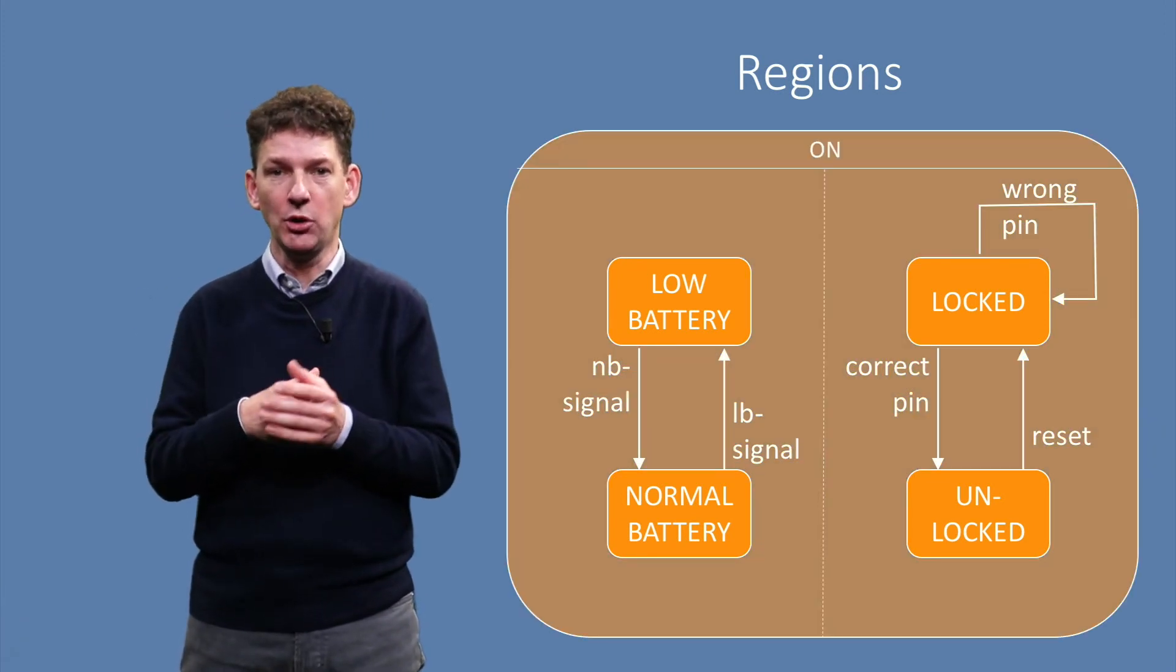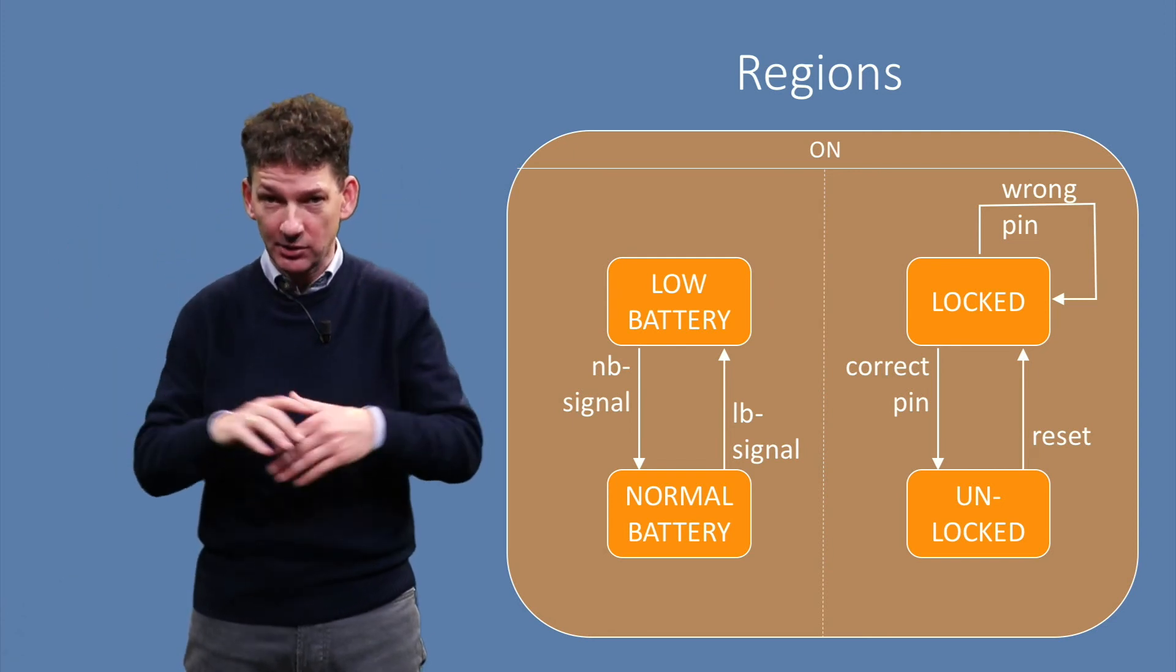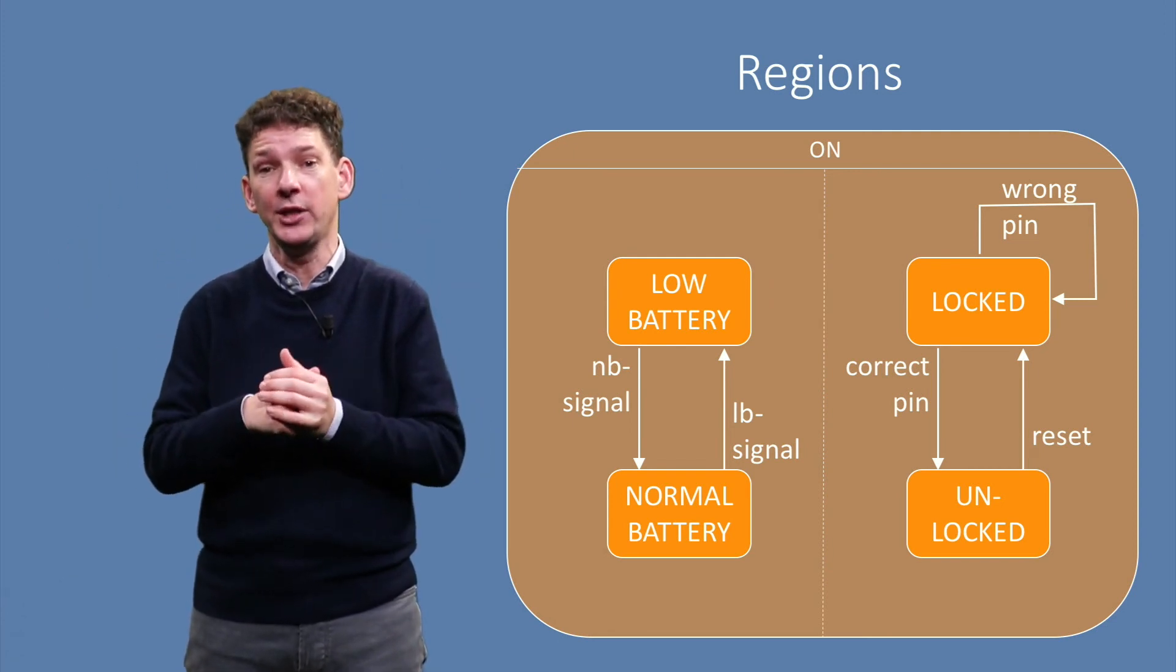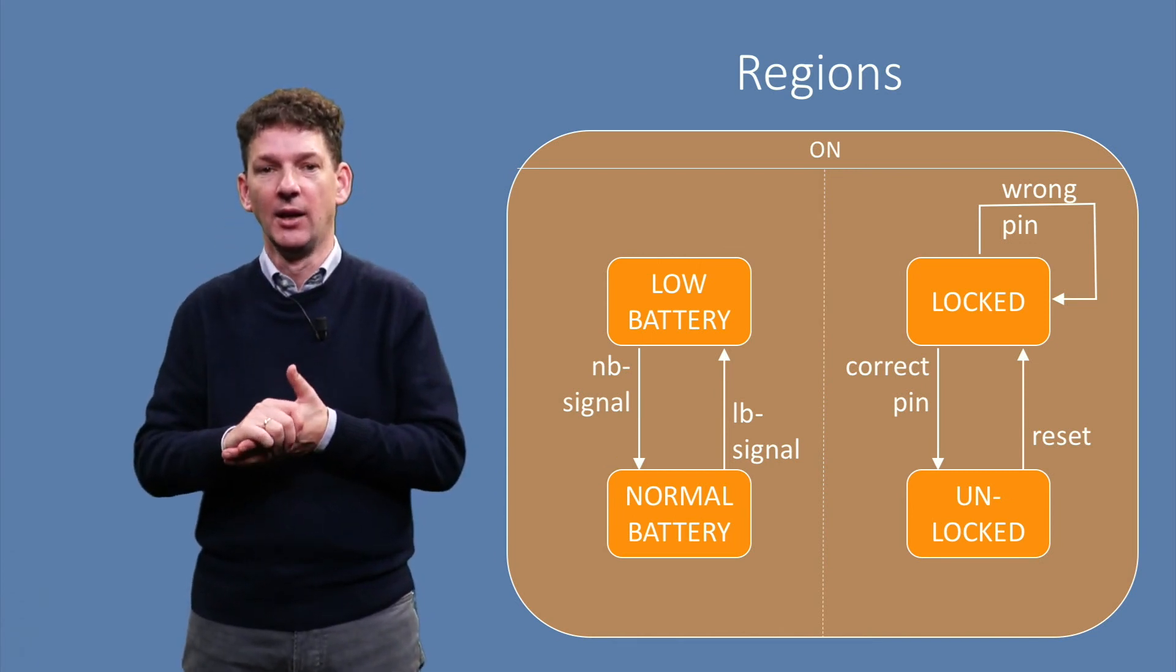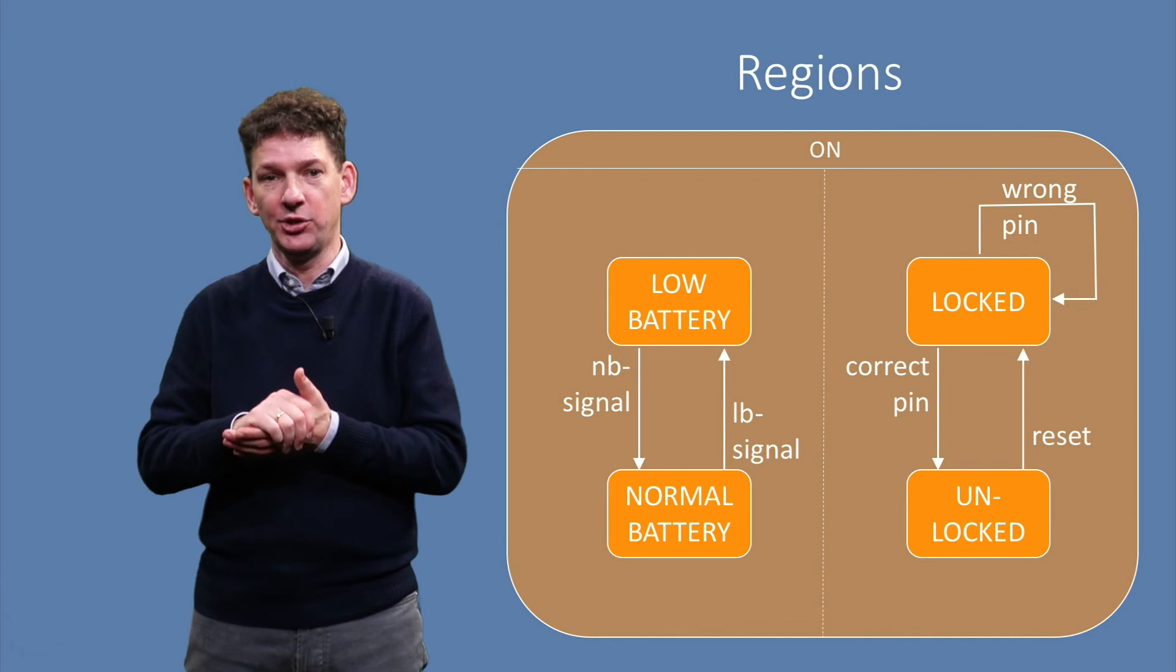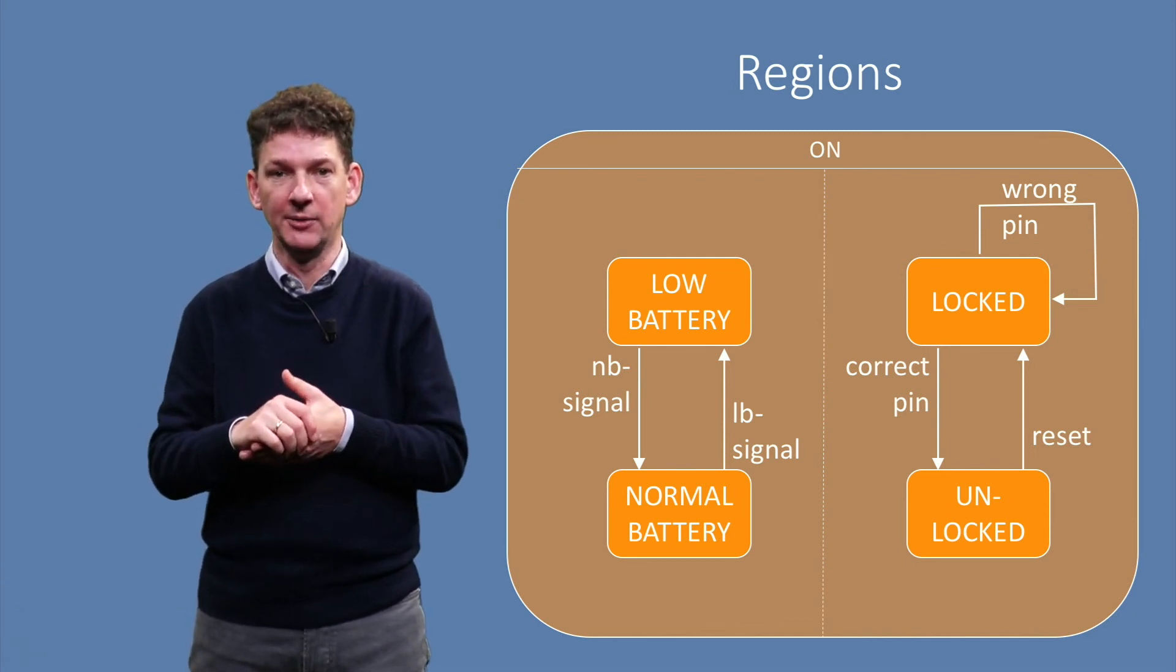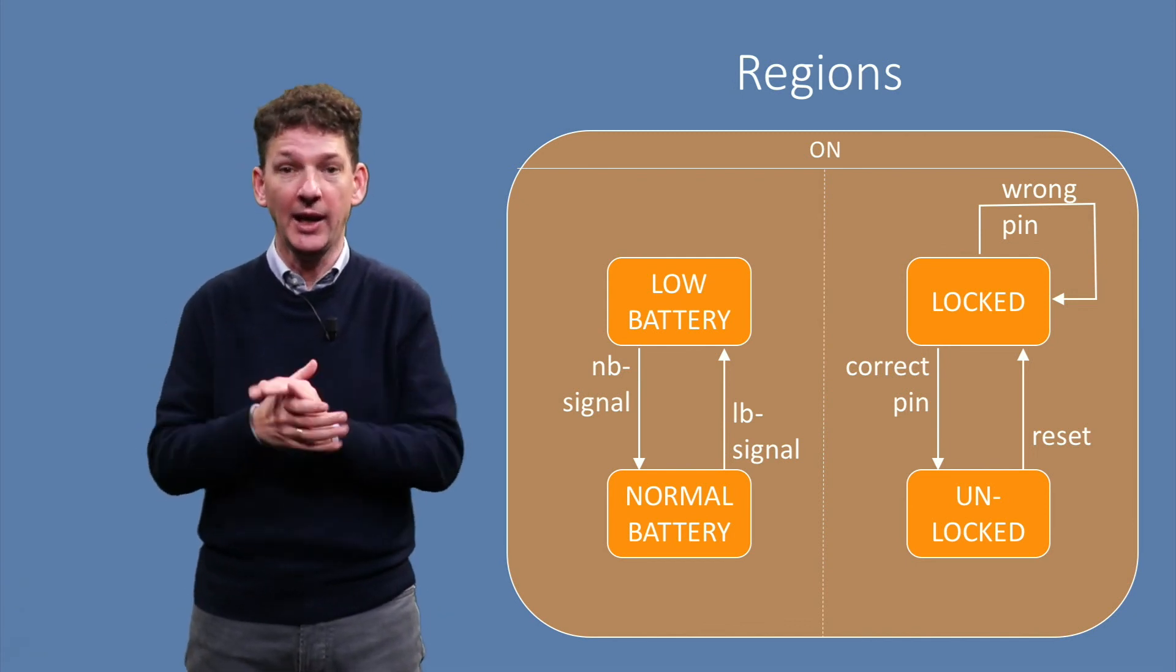These two state machines can be combined by creating a super-state called orthogonal regions, two independent parts separated by a dashed line. The right and left state machines operate independently, and the events can even be interleaved.